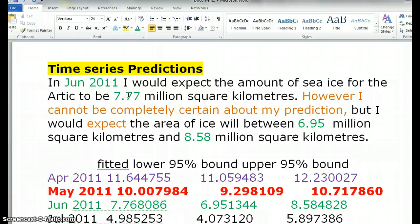So you're actually making a pinpoint prediction that you're expecting 7.77, but you can't be completely accurate because of variation. So it's going to be between the 6.95 and the 8.58. And even that's not certain, because you're only 95% certain.